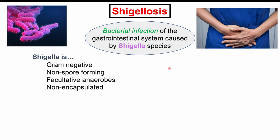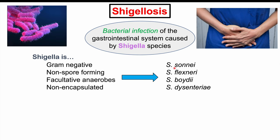There are four species of Shigella bacteria. These are known as Shigella sonnei, Shigella flexneri, Shigella boydii, and Shigella dysenteriae.